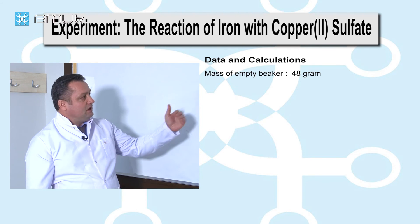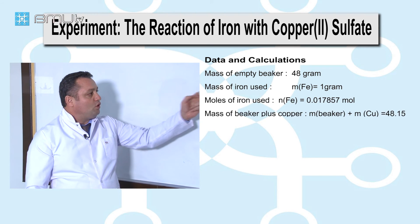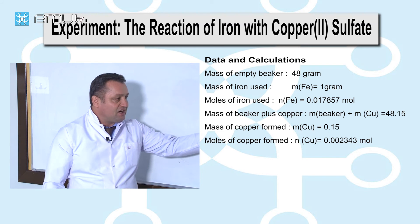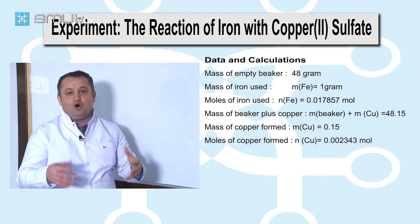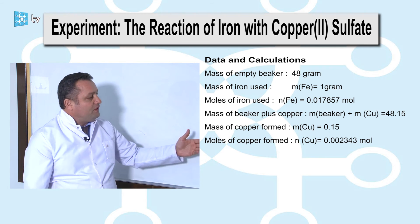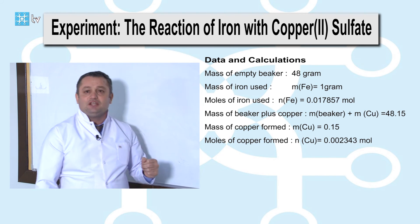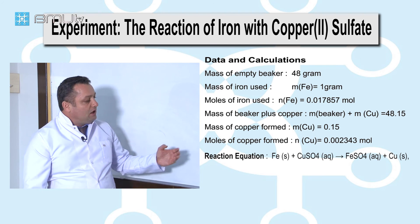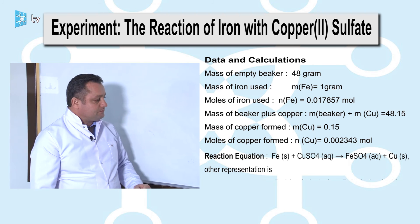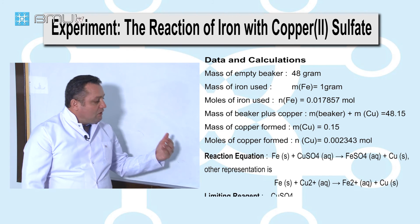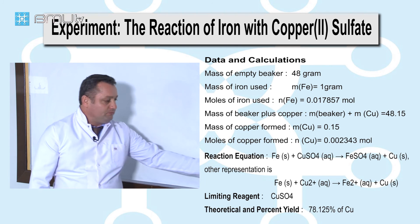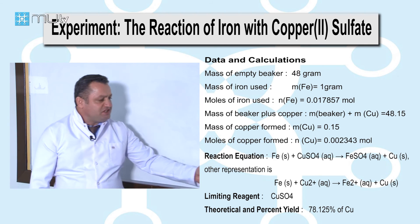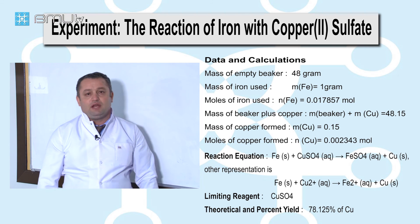We should calculate the mass of the empty beaker, the mass of iron used, the moles of iron used, the mass of the beaker plus copper, the mass of copper formed after the reaction, the moles of copper divided by moles of iron, and then arrive at the correct reaction equation. The reaction equation between iron and copper sulfate is established, and from this we identify the limiting reagent. The theoretical yield is calculated using this equation to find both theoretical and actual yield of this reaction.